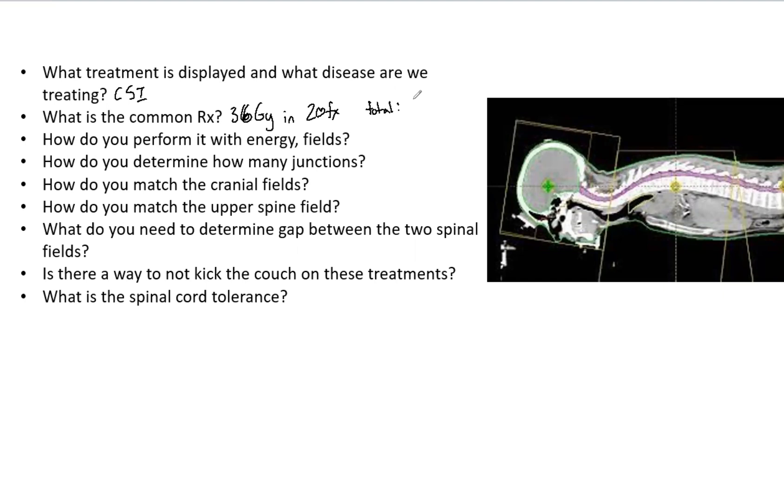How do you perform it with the energy and different fields? For the brain fields, you want to use 6X—essentially just like a normal 3D whole brain. For the spine, we want to dive and go a little deeper, so we're going to use for an adult 10 or 18X.